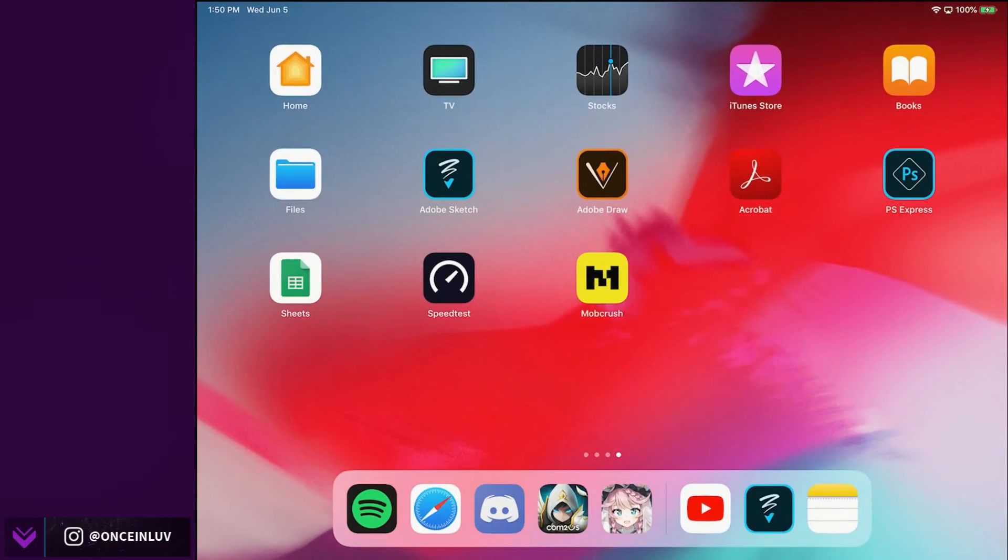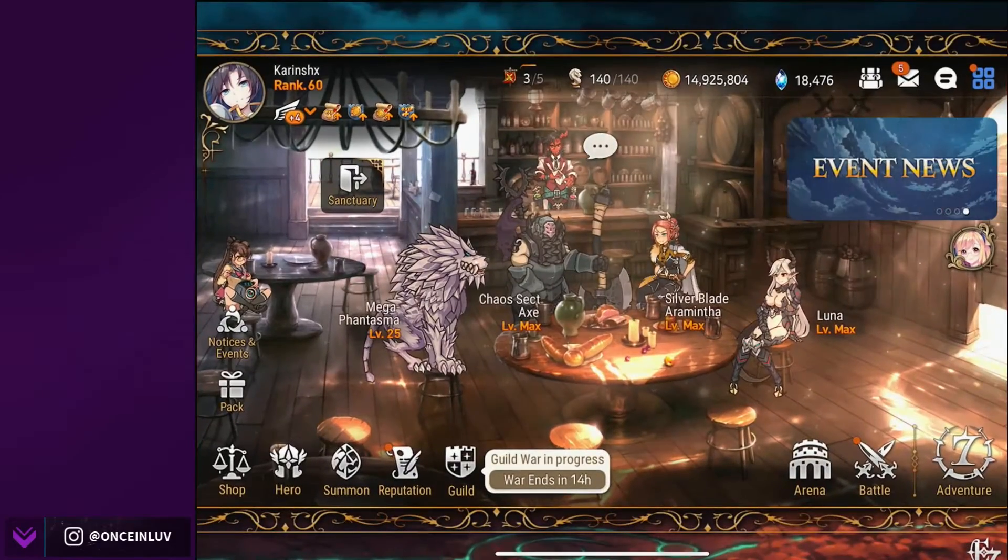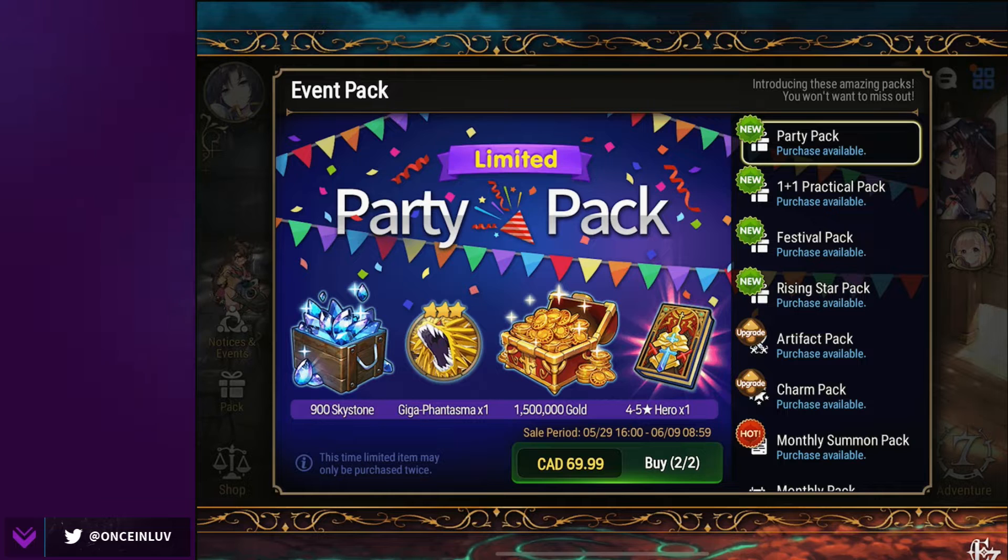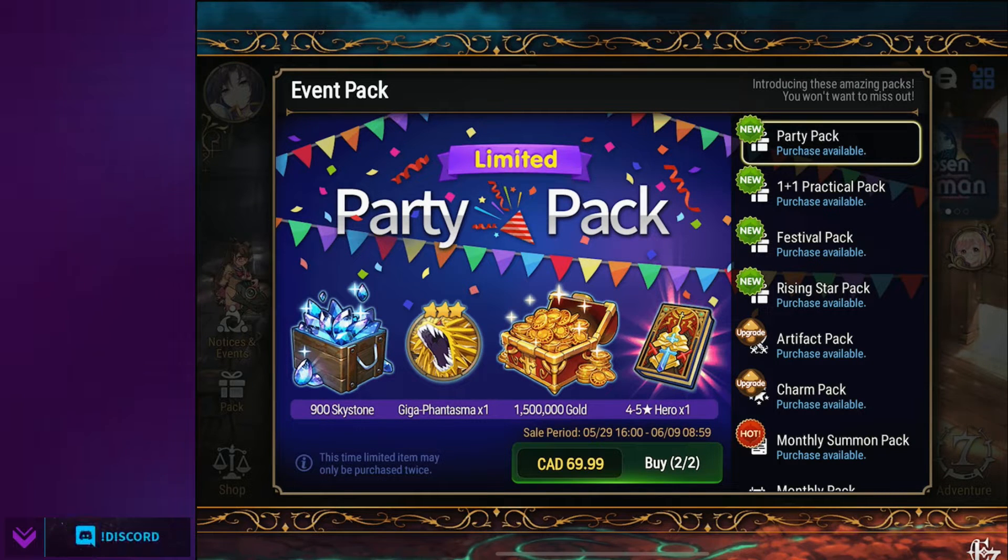Okay so first let's take a look at the packs. We have a lot of new packs to look at. I've already bought the Arkys pack, it was like three dollars, definitely good value. The party pack here has 900 skystones, a giga phantasma, 1.5 million gold, and a four to five star hero ticket for 70 Canadian. This will be about 50 US I believe.